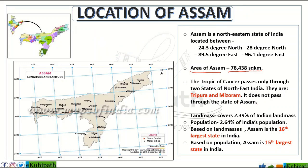Assam covers around 2.39% of India's landmass. On the basis of geographical area, Assam ranks as the 16th largest state in India.